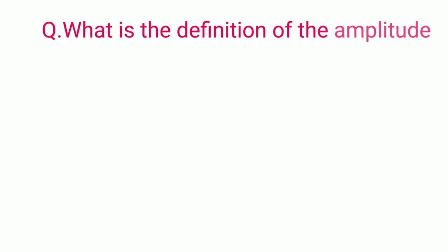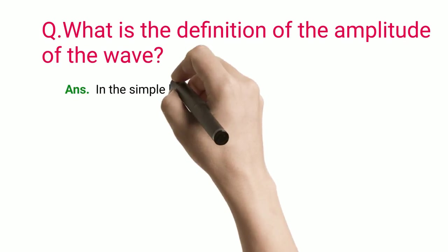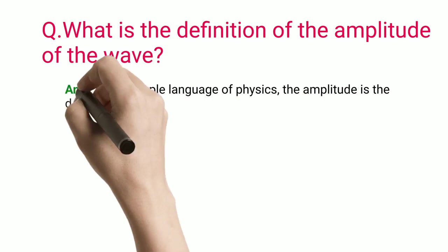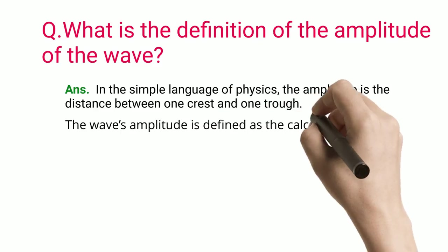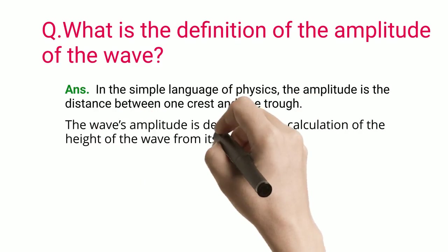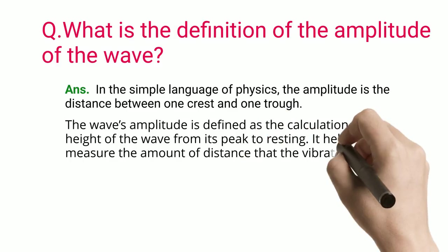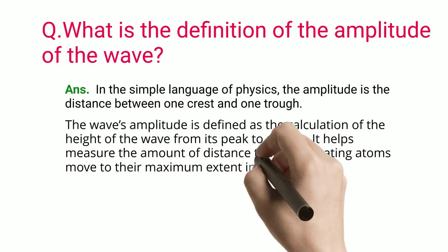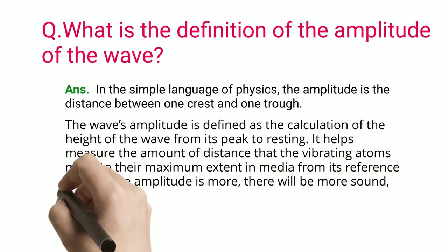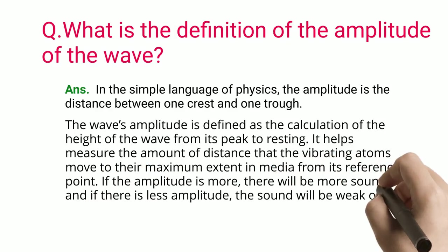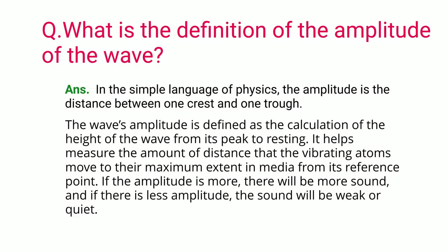What is the definition of the amplitude of the wave? In the simple language of physics, the amplitude is the distance between one crest and one trough. The wave's amplitude is defined as the calculation of the height of the wave from its peak to resting. It helps measure the amount of distance that the vibrating atoms move to their maximum extent in media from its reference point. If the amplitude is more, there will be more sound; and if there is less amplitude, the sound will be weak or quiet.